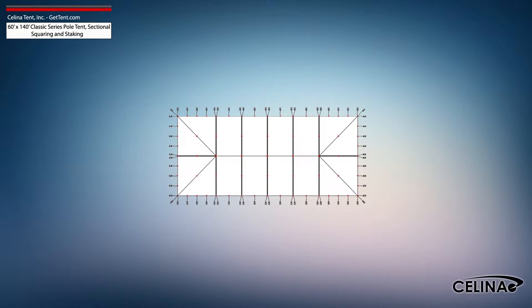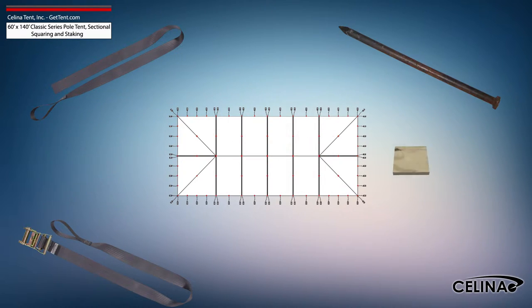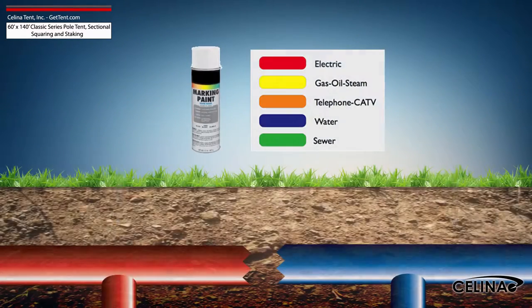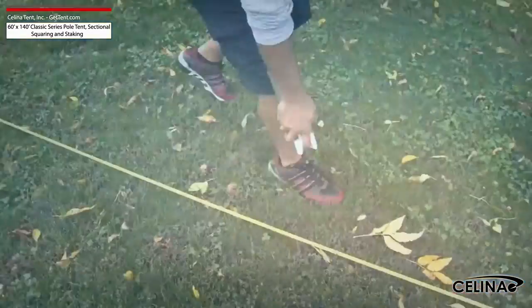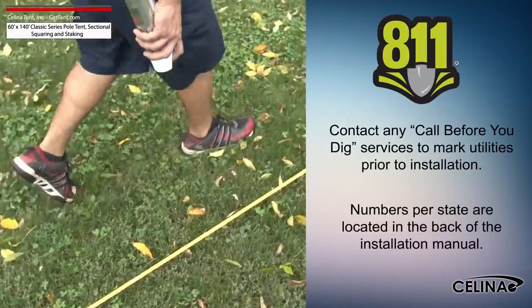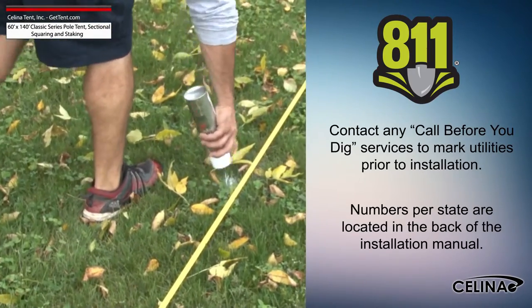Tent squaring allows the installer to accurately place all tent hardware and install tent stakes prior to beginning setup, and helps them avoid any marked underground utilities. Utilities must be marked by your state's local utility services prior to any tent installation.